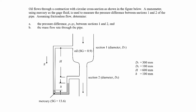We're given some information about the dimensions of this thing. We know the diameter d1, the diameter d2, the height little h, and the height capital H. We're dealing with oil going through the pipe and mercury as the working fluid in the manometer.